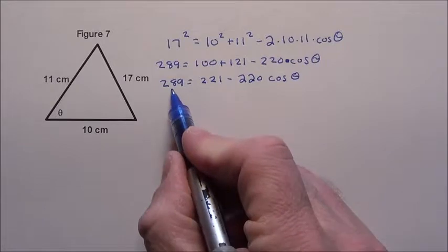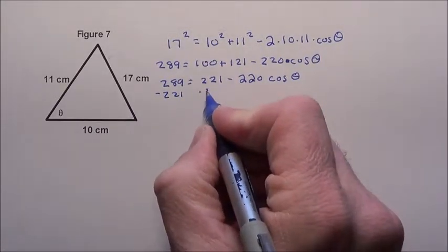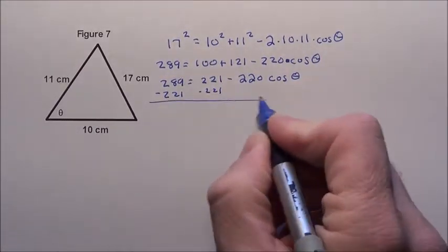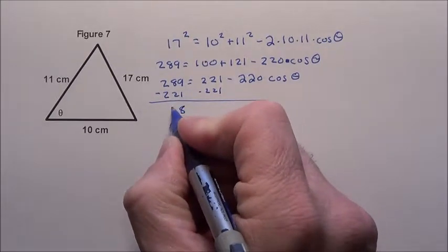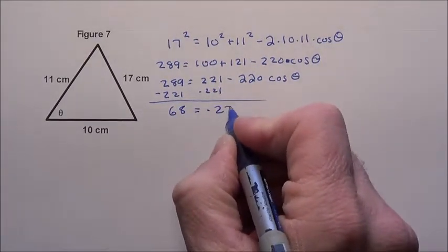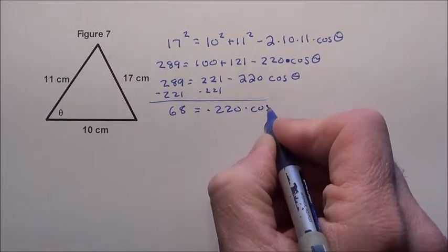I'm going to move this 221 over here. So I'm going to subtract 221 from both sides. 221, that's an 8, and that's a 6, is equal to negative 220 times the cosine of theta.